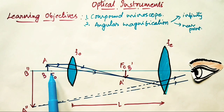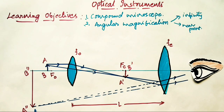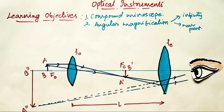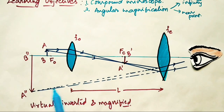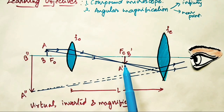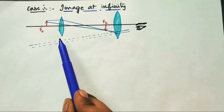The object to be observed is placed just outside the focus of the objective lens. We can see that the image is formed here, which is real, inverted, and magnified. This acts as an object for the second lens, and the final image is formed here — as it is between the optical center and focus, a virtual, inverted, and magnified image is formed due to the second lens. The eyepiece acts like a simple magnifier. The nature of the final image formed by the compound microscope is virtual, inverted, and magnified. The intermediate image is real, inverted, and magnified.